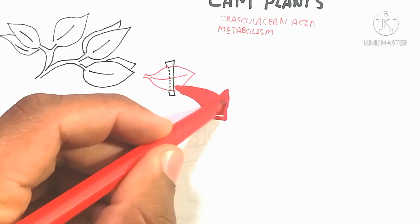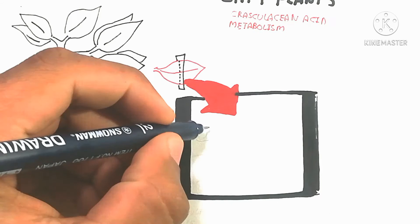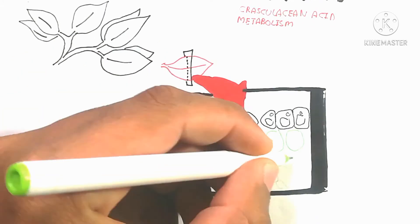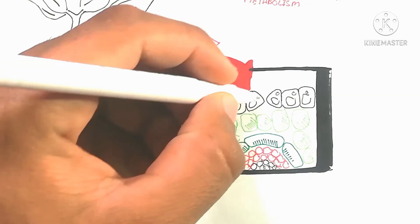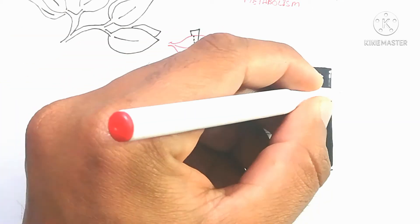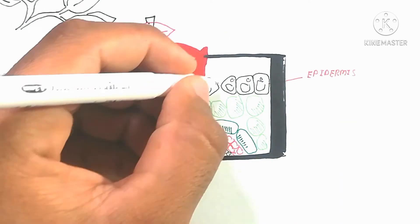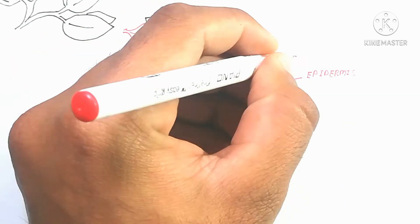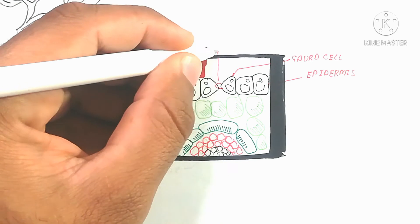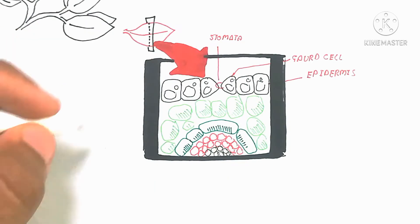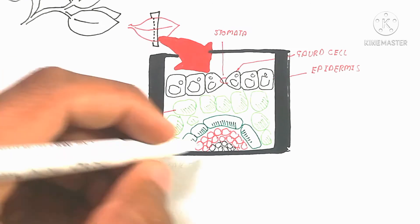The leaf structure contains spongy mesophyll cells as well as the epidermis. Chloroplast-containing organelles are present in the mesophyll cells. The stomata and guard cells are visible here. The upper side is the epidermis, and below the epidermis is the mesophyll cell, which is not arranged like in C4 plants, which have palisade mesophyll cells and spongy mesophyll cells.